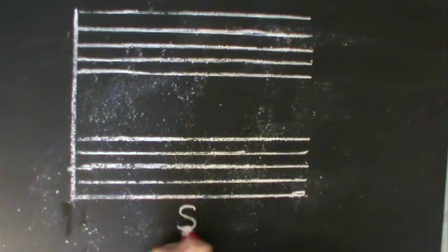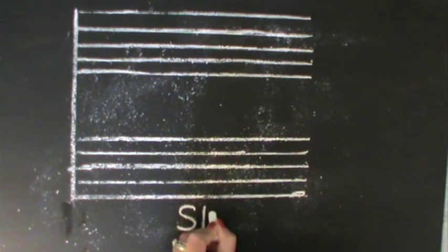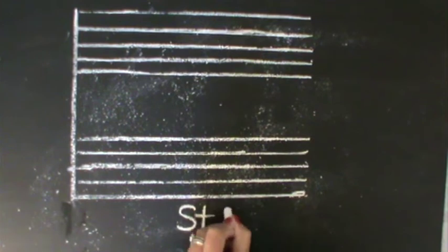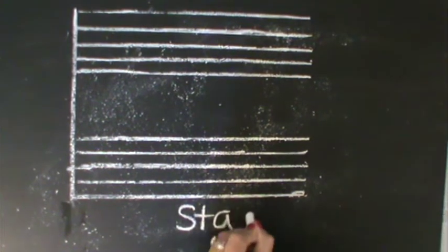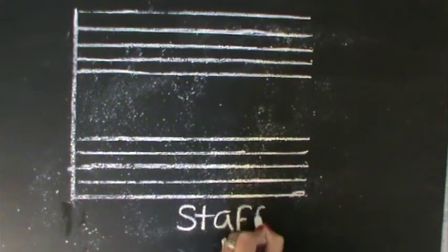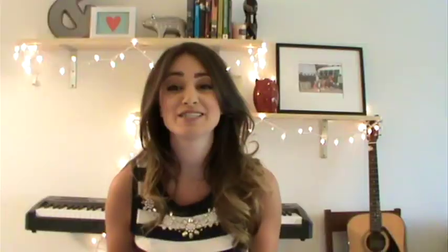The background for all written music is the staff. Think of the staff as your new alphabet and each line or space as a different letter with endless possibilities of words to make up. Just as you can put together different letters to make words and phrases, you can put different pitches and notes on the staff to create chords and melodies.